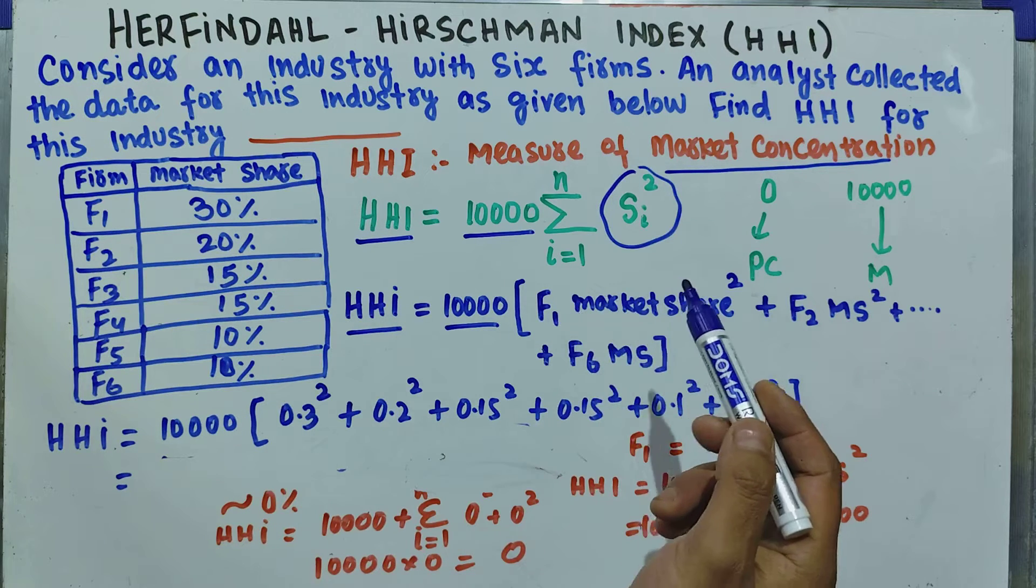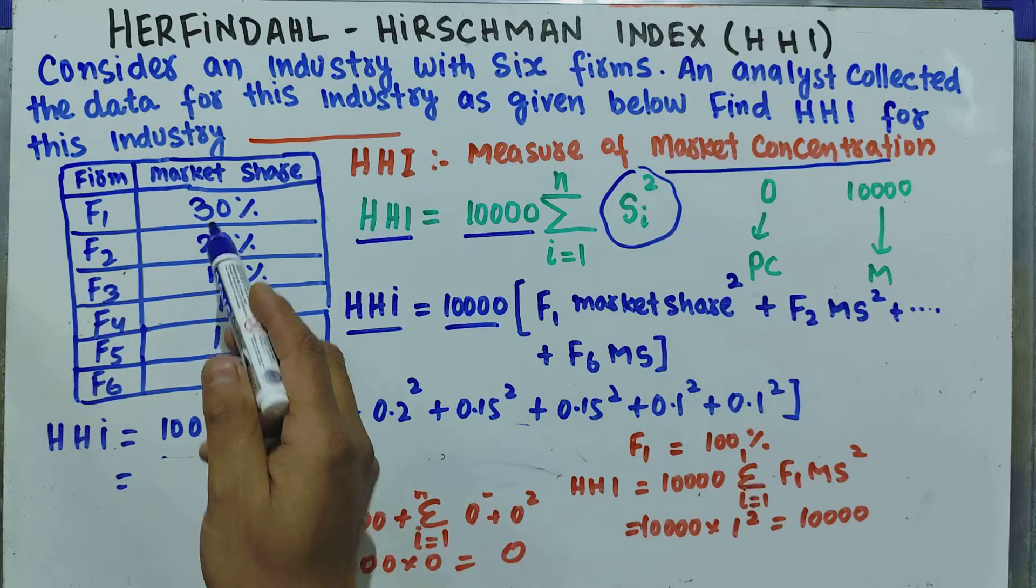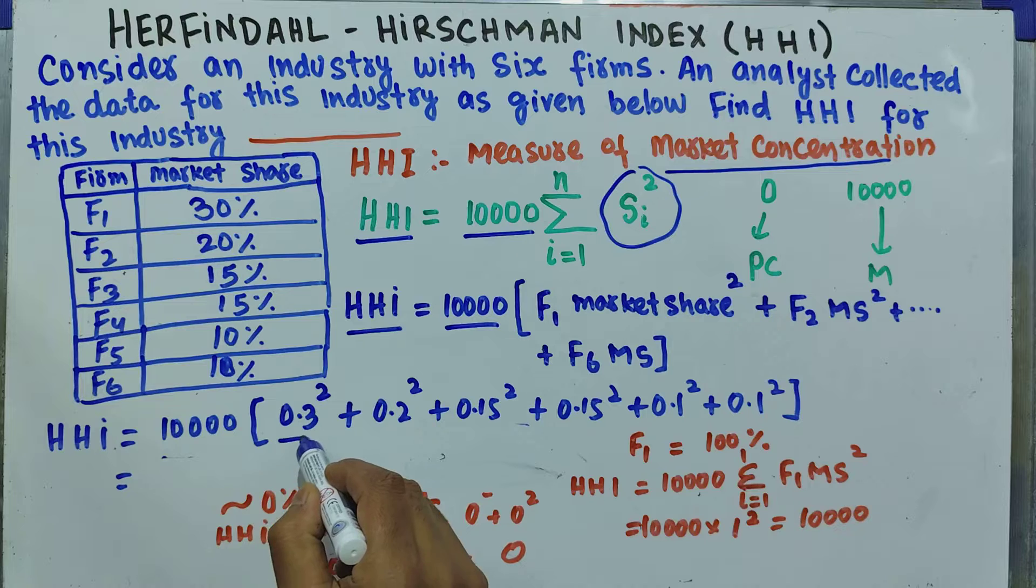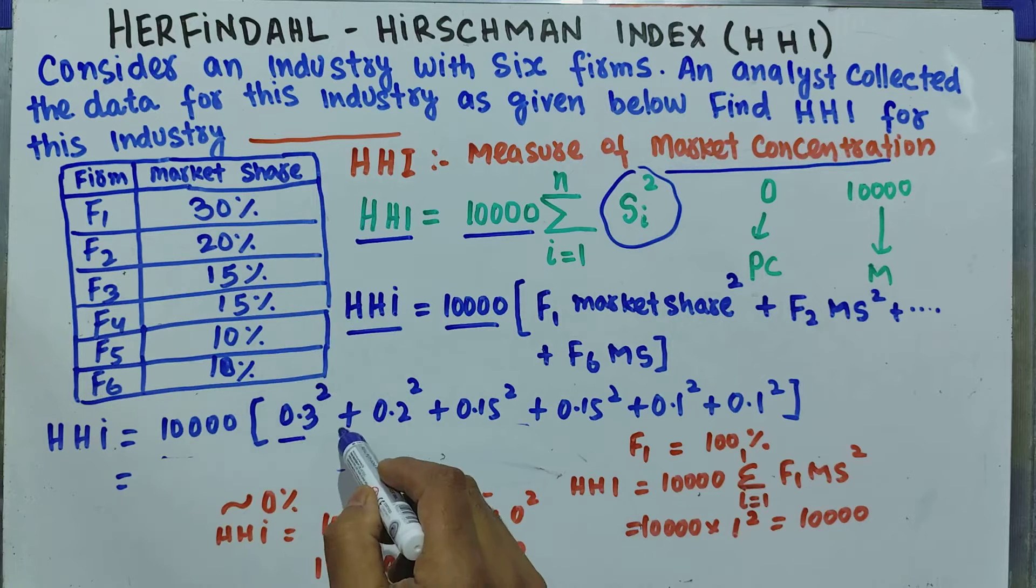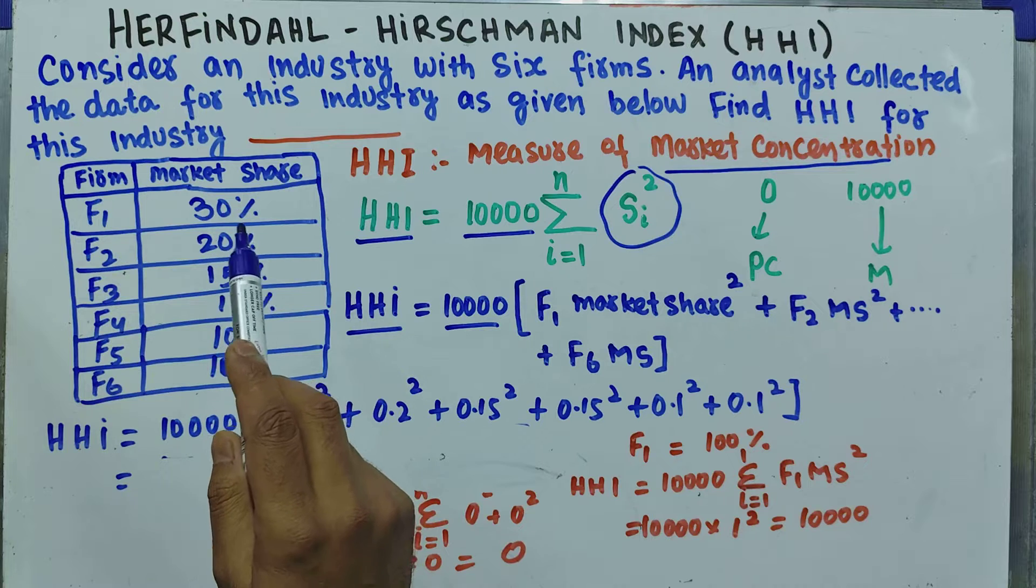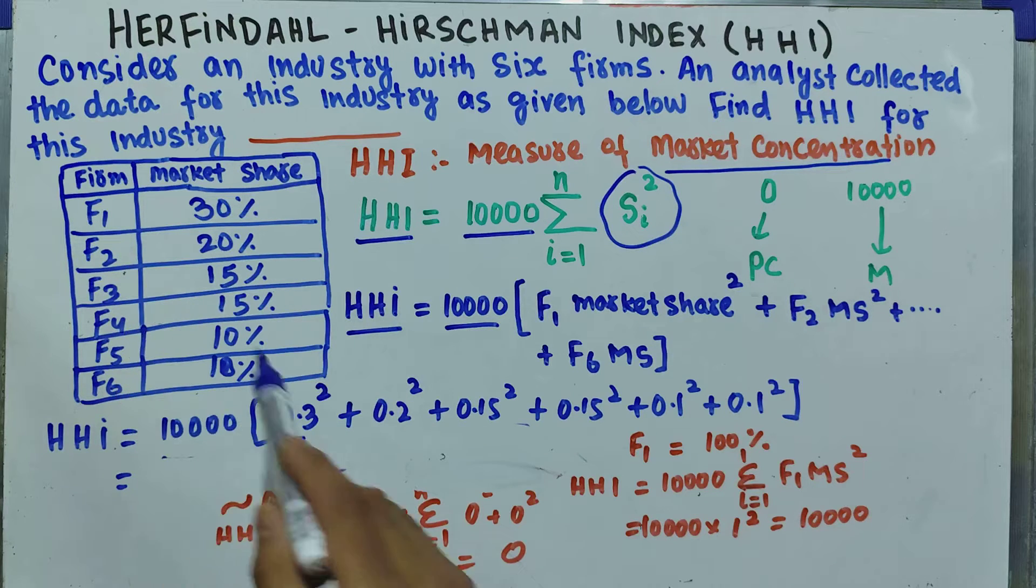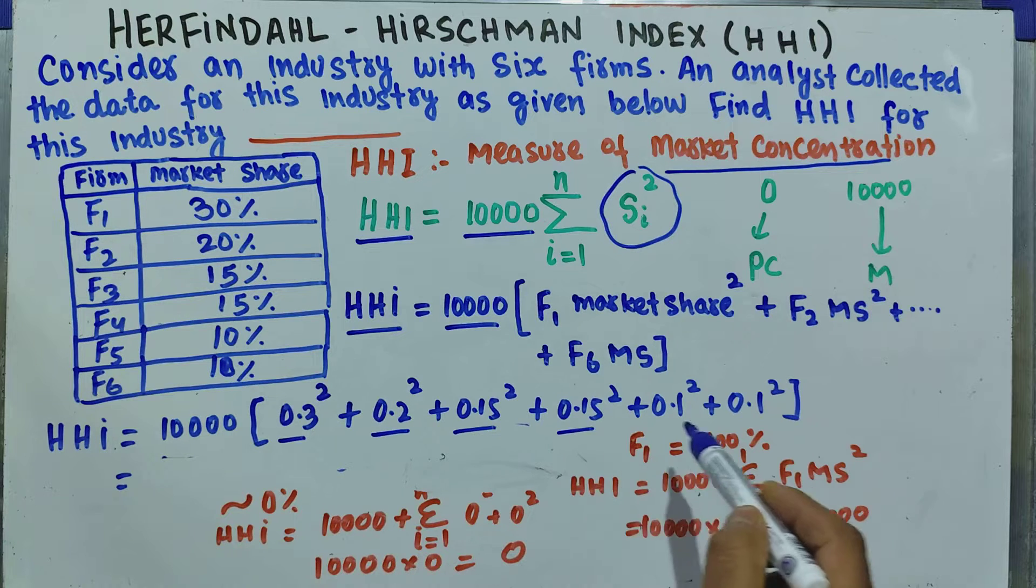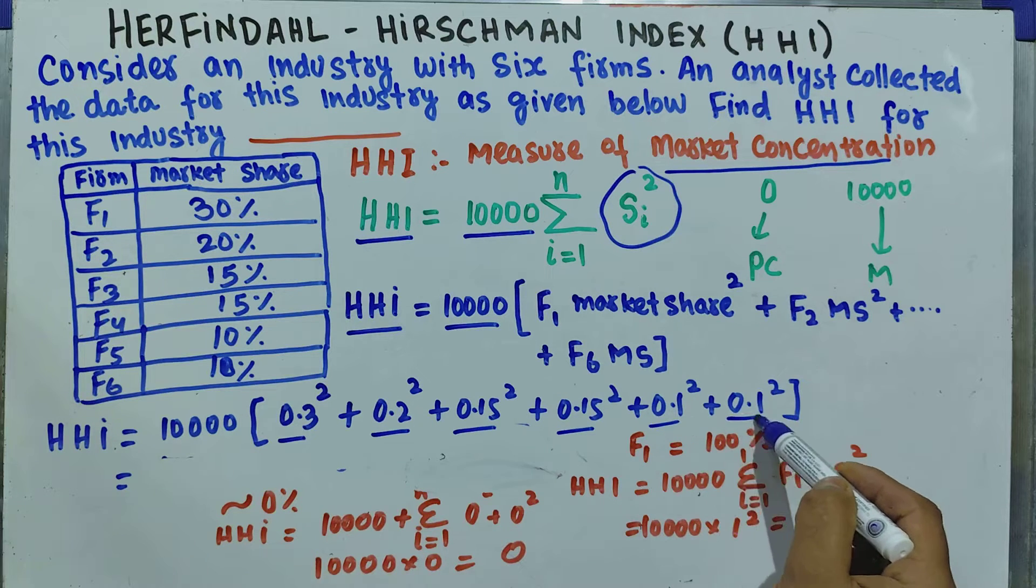What is the share of firm one in the total market? This is 0.3 (30% can be written as 0.3), so we square this: 0.3 squared. Similarly, we square the share of market by firm two: 0.2 squared, then 0.15 squared, 0.15 squared, 0.1 squared, and 0.1 squared.